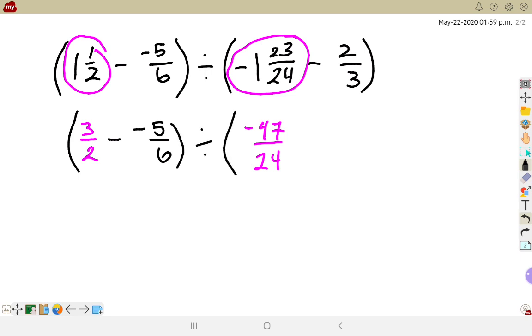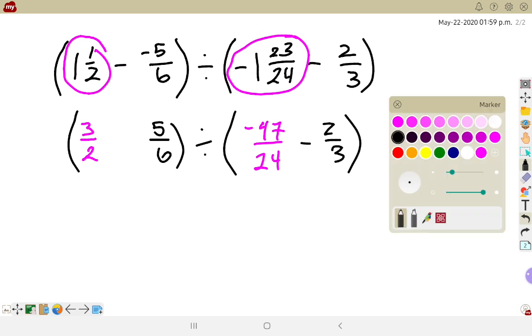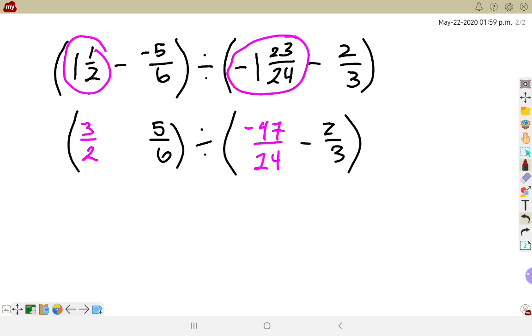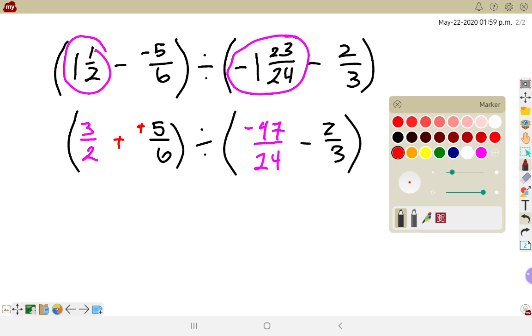Now if you felt like it in that step, you could have gone, instead of saying minus negative 5 sixths, I could also, at the same time, instead of thinking of it as subtracting a negative, I could rewrite it as adding the opposite. So now it's adding a positive 5 sixths. So I'm allowed to do that step at the same time.